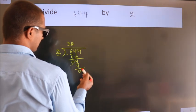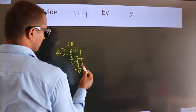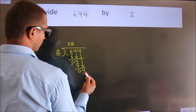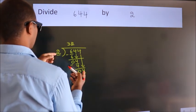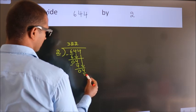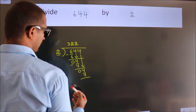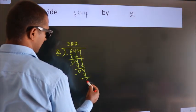After this, bring down the beside number. So 4 down. When do we get 4? In 2 table. 2 times 2 is 4. Now we subtract. We get 0.